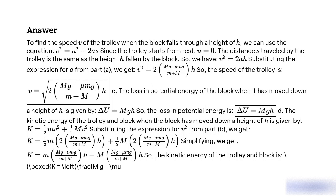The kinetic energy of the trolley and block when the block has moved down a height h is given by K equals one-half Mv² plus one-half mv². Substituting the expression for v² from part B, we get K equals one-half M times 2(mg minus mu MG) divided by (M plus m) times h, plus one-half m times 2(mg minus mu MG) divided by (M plus m) times h. Simplifying, we get K equals (mMg minus mu MG) divided by (M plus m) times h.